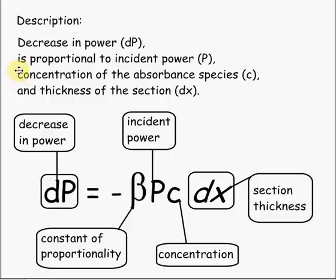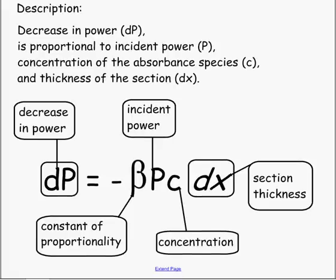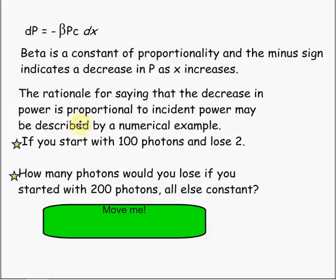The decrease in power is proportional to the incident power, the concentration of the absorbent species, and the thickness of the section. Beta is the constant of proportionality, and the minus sign indicates a decrease in power P as X increases. Remember, X is our path length. The rationale for saying that the decrease in power is proportional to the incident power may be described by a numerical example.